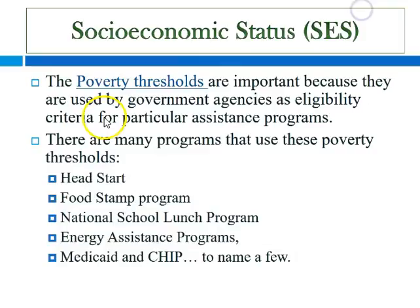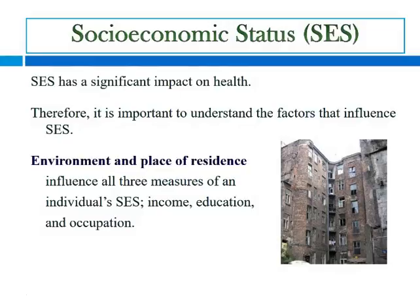What else do we know about socioeconomic status? We know that individuals with the greatest financial resources have the greatest ability to access health services and to obtain the highest quality care. Income translates into purchasing power for health care services, and income also becomes part of a larger concept of social possession, generally referred to as the socioeconomic status of a person. We know that socioeconomic status has a significant impact on health, and therefore it's important to understand the factors that influence it.